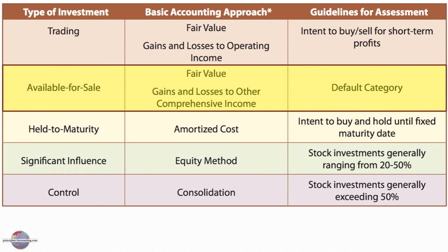In contrast, available-for-sale securities are the default category. They are carried at fair value on the balance sheet, and gains and losses are recognized in a unique other comprehensive income account that we'll be exposed to.